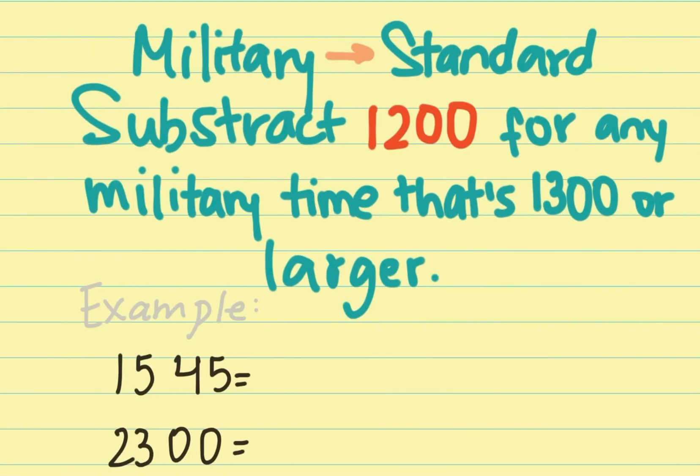Now if I want to convert from military time to standard time, you're going to do the opposite, which is subtract 12 for any military time that's 1300, that means 1 p.m., or larger. We have two examples again. The first one is 15:45. We're going to subtract 12 from it, so that gives us 3:45.